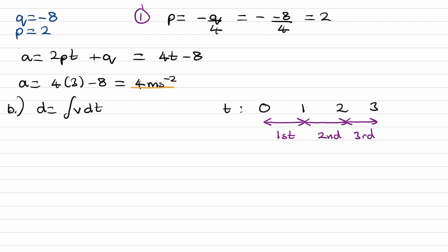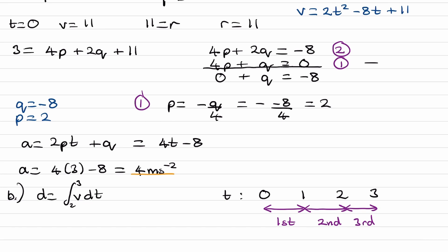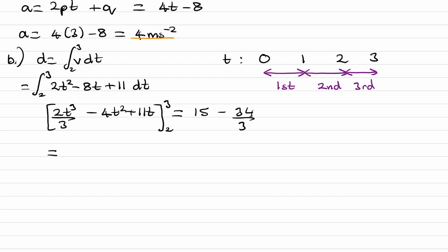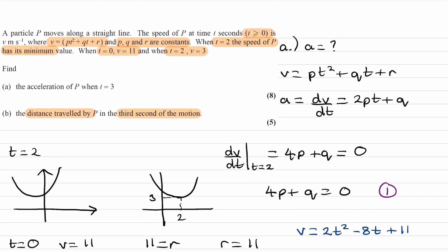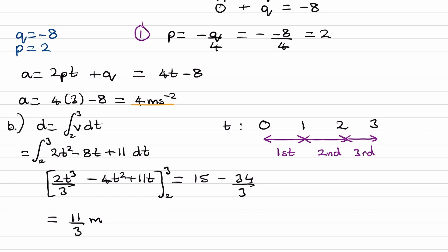We integrate speed from two to three. Our velocity is 2t squared minus 8t plus 11. Integrating gives 2t cubed over 3 minus 4t squared plus 11t, evaluated between limits two and three. Substituting t equals three gives 15, and substituting t equals two gives 34 over 3. Taking the difference gives 11 over 3. Speed is in metres per second and t is in seconds, so the distance is 11 over 3 metres.